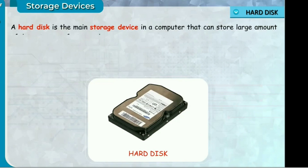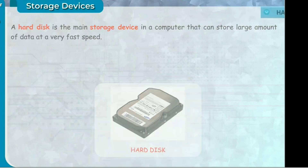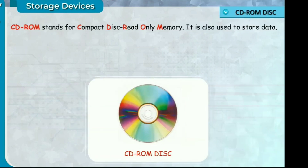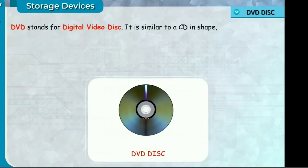CD-ROM stands for compact disk read only memory. It is also used to store data. It is circular in shape. DVD — DVD stands for digital video disk. It is similar to a CD in shape but has a larger storage capacity.